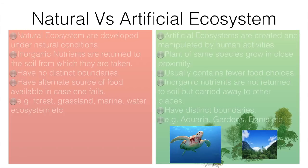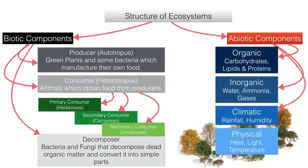Now let's discuss the structure of ecosystem — how ecosystems are made up and what their different components are. There are two basic components: biotic (living) and abiotic (non-living). Biotic components are divided into three parts: producers, consumers, and decomposers.